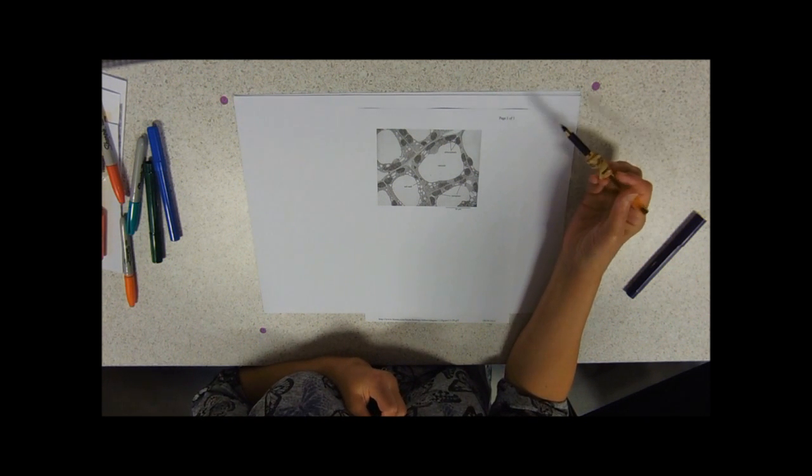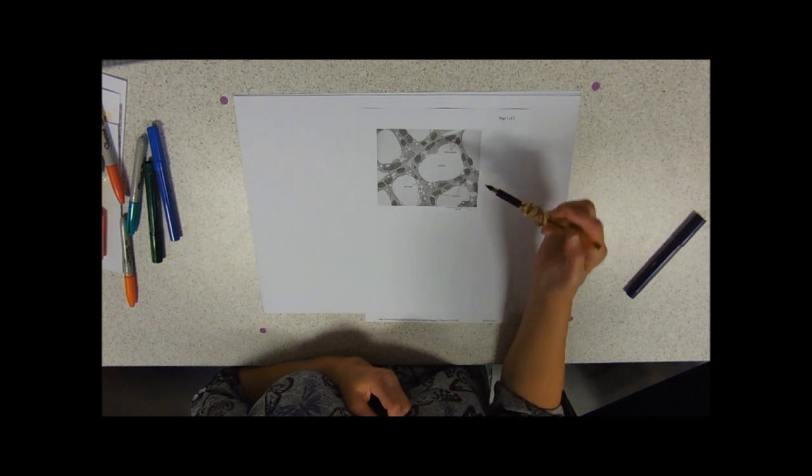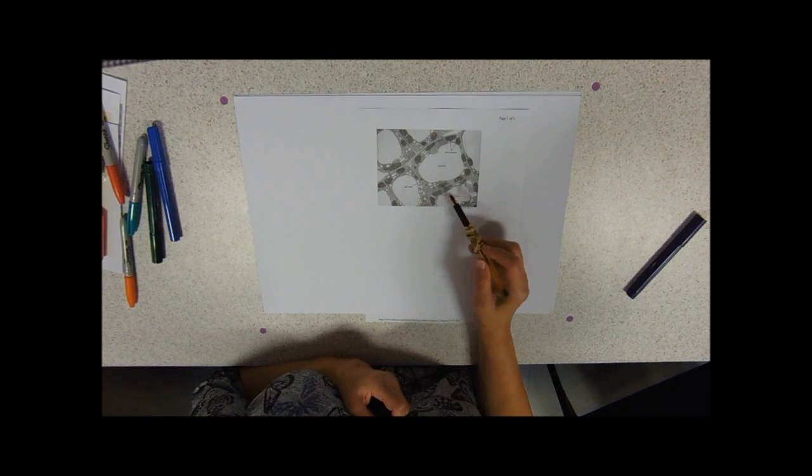So just while we're on this electron micrograph here, we can see that we've got chloroplasts. Dead giveaway is those little dark, dark lozenge, dark stripes in them.